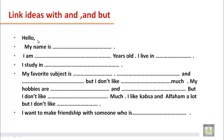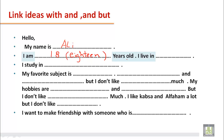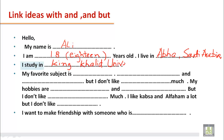Start with 'Hello.' Because you're writing to a website, you will write: 'My name is Ali. I am 18 years old.' You can write the age in figures or in words. 'I live in Abha, Saudi Arabia.'